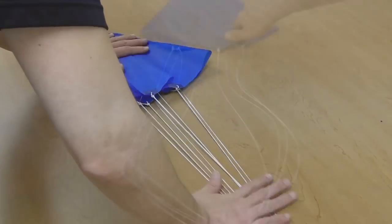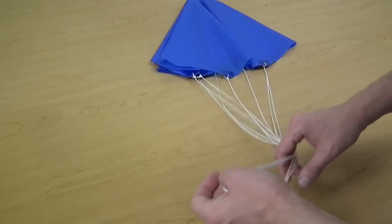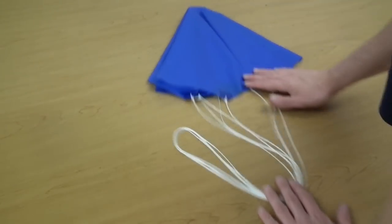Spread it out on the table and stretch the strings out until you find the middle. This is where you'll attach to your rocket.